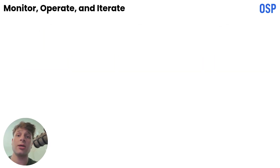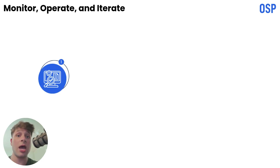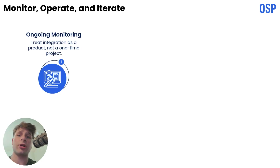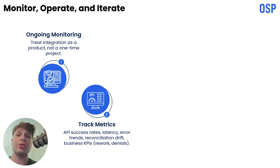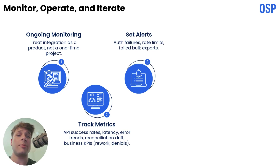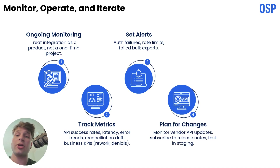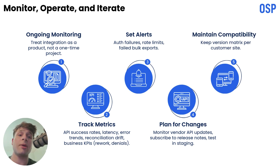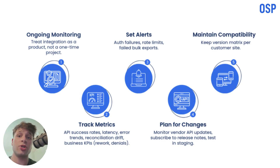Integration is like a product, not a one-time project. After go-live, you must monitor continually. Track key metrics like API success rates, latency, error patterns, reconciliation drift, and business KPIs like reduced rework or fewer denials. Set up alerts for auth failures, rate limits, and failed bulk exports. Plan for vendor API changes — EHRs update their FHIR implementations, so subscribe to vendor release notes, test updates in staging, and maintain a version compatibility matrix for each customer site.